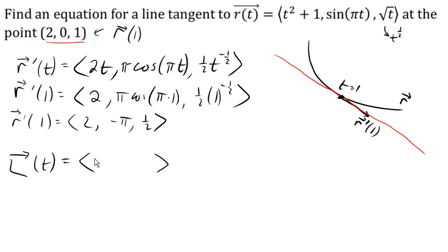And then the direction vector of the line will be our r prime at 1. And there is an equation for the line tangent to the curve passing through that point.